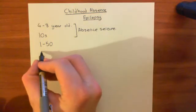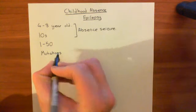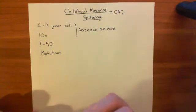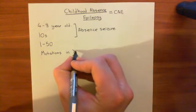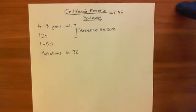Basically, it's mutations in the gamma-2 subunit, and this is going to be the same for all these forms of epilepsy — not just for childhood absence epilepsy or CAE, but also for generalized epilepsy with febrile seizures and severe myoclonic epilepsy of infancy. They're all mutations in the gamma-2 subunit. These mutations cause too little activity of the GABA-A receptor.